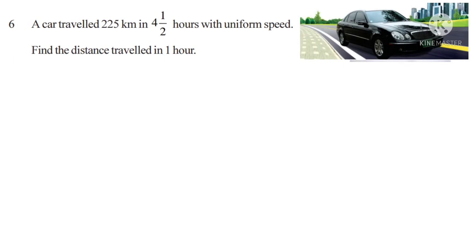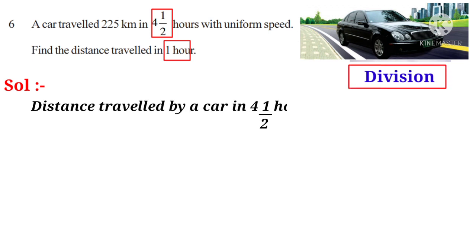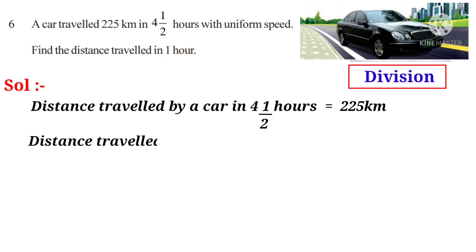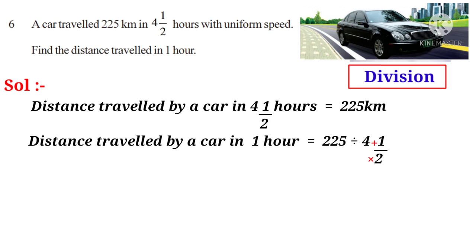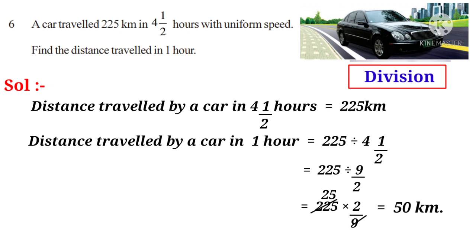Problem 6: A car travelled 225 kilometers in 4 and a half hours at uniform speed. Find the distance travelled in 1 hour. The time reduces from 4½ hours to 1 hour, so the operation is division. Distance in 4½ hours = 225 km. Distance in 1 hour = 225 ÷ 4½. Convert 4½ to improper fraction: 2 × 4 + 1 = 9/2. So 225 ÷ 9/2 = 225 × 2/9. On simplification by 9, that is 25 × 2 = 50 kilometers per hour.